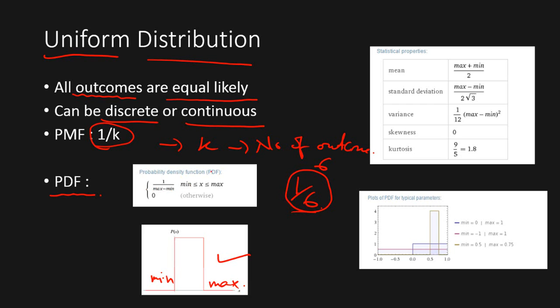The parameters to the uniform distribution in the continuous case are the minimum value of the random variable x and the maximum value of the random variable x. That's about uniform distribution in the continuous case.